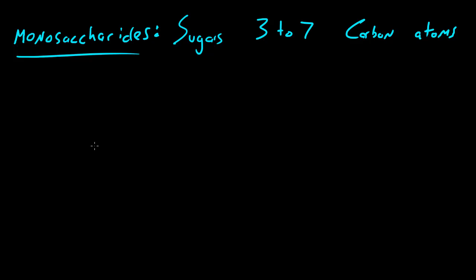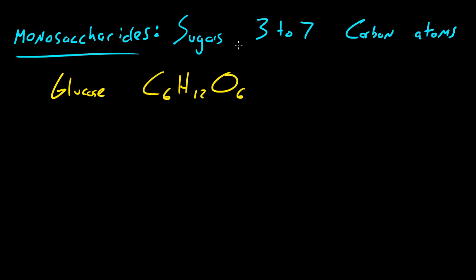For right now, remember in the last tutorial I told you that glucose had the chemical formula C6H12O6, which means that it's a carbohydrate. And if we look at the definition, it's a sugar — anything that ends in O-S-E is a sugar. Since the carbon atoms here is 6, which falls in the 3 to 7 range, that's why glucose is a carbohydrate and also a monosaccharide.